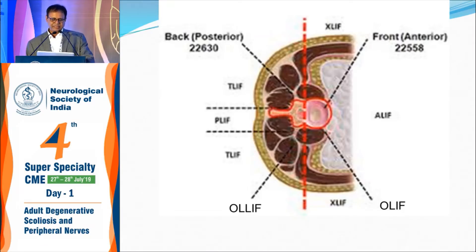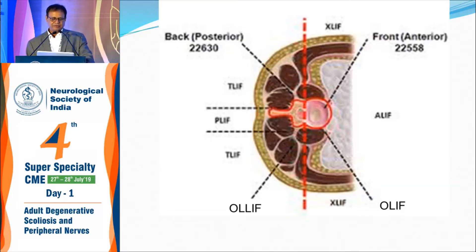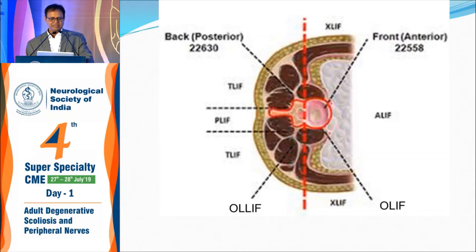When done transperitoneally or extraperitoneally in a supine position, it is more commonly done for L5-S1 — that is called anterior lumbar interbody fusion, which can also be done for L3-4 and L4-5. When done directly through the psoas muscle laterally through the extraperitoneal space, it is called XLIF or DLIF. Going through the psoas muscle risks damaging the lumbar plexus. To avoid that, one can go in front of the psoas muscle — between the vessels and the anterior part of the psoas there is a bare area — if one goes through that extraperitoneally, it is called oblique lumbar interbody fusion, which has less risk of lumbar plexus damage.